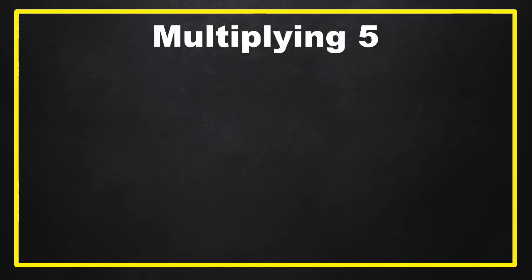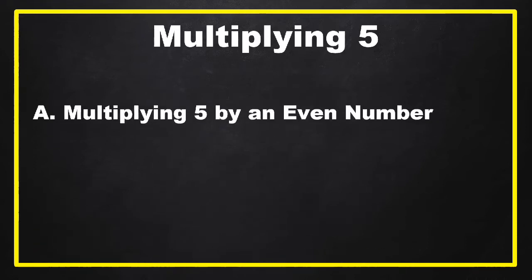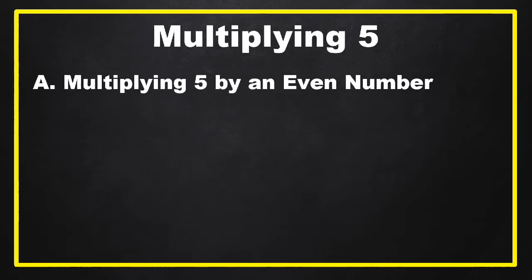Hello guys, today I'm going to teach you the fastest shortcut in multiplication — you can get your answer in just two to three seconds mentally. This is multiplying by five. In multiplying by five, we have two parts.